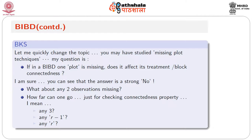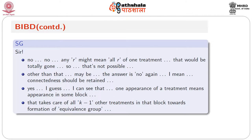Just for checking the connectedness property, could it be that any r observations are missing and the design is still connected? The answer is no — any r might mean all r replications of one treatment, which would be totally gone. So that's not possible. But other than that, connectedness should be retained, because one appearance of a treatment in some block connects it to all k-1 other treatments in that block, and through lambda, to treatments outside that block.